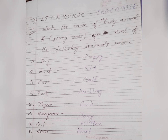Number C: Write the name of the baby animal or the young ones of each of the following animals. Number 1: Dog — the baby of dog is puppy. Number 2: Goat — the baby of goat is kid. Number 3: Cow — the baby is calf. Number 4: Duck — the baby is duckling. Number 5: Tiger — the baby is cub.